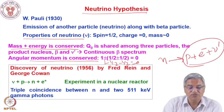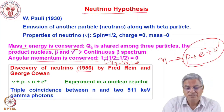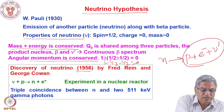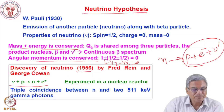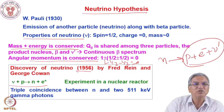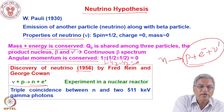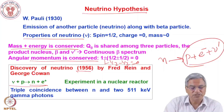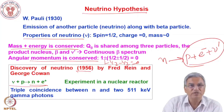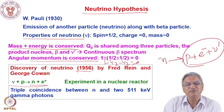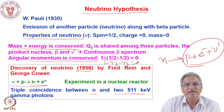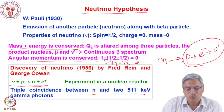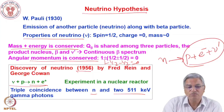The neutrino was discovered in 1956. In nuclear reactors there are many neutrinos from beta decay, and these neutrinos interact with hydrogen to give a neutron and a positron. A triple coincidence — detecting a neutron in a neutron detector and two 511 keV gamma rays from positron annihilation — provided unambiguous proof of the existence of the neutrino, almost 25 years after Pauli's prediction.